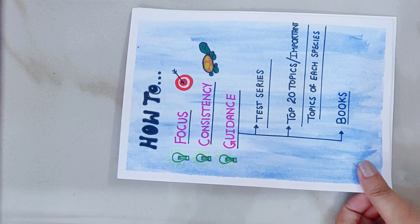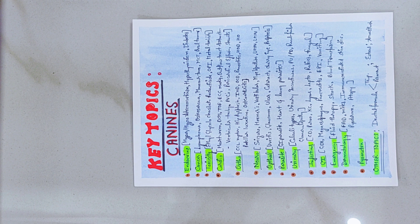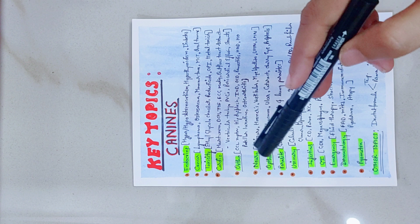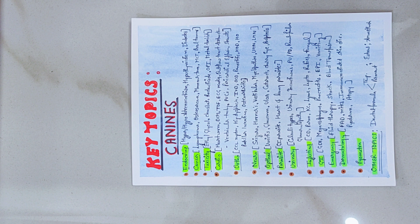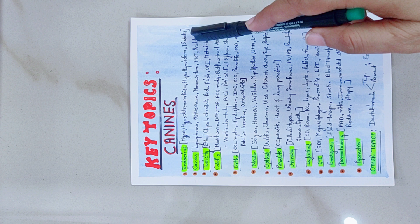Now the most important slide — important topics for canines. These are system-wise topics; if you prepare these, you can cover almost 80 to 90 percent of the canine question portion. The first system is endocrine, which includes hyperadrenocorticism, hypothyroidism, and diabetes.